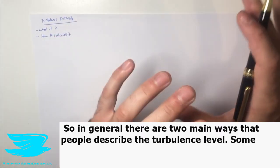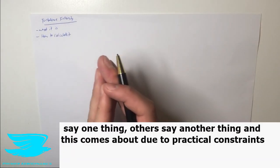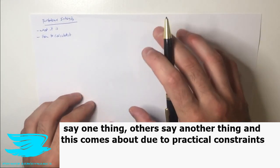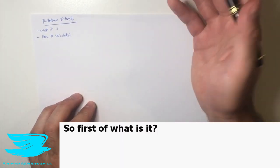So in general, there are two main ways that people would describe the turbulence intensity level. Some aerodynamicists say it's one thing, others say it's another thing. And this comes about due to practical constraints. So first of all, what is it?